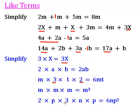2 times p times 3 times n times p. Multiplying the numbers together which will give us 6. p times p will give us p squared times n. So that will be 6np squared.